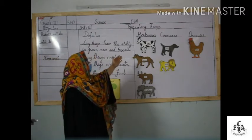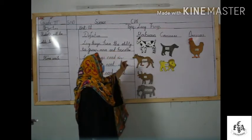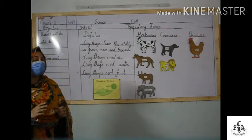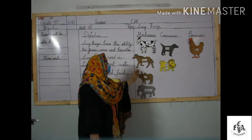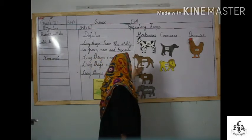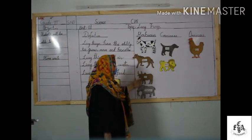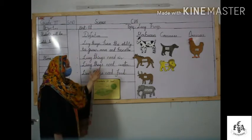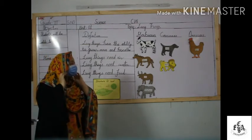Now, there are three types of living things based on the different types of food they eat. Number one: herbivores. Green plants can make their own food. Animals that do not make their own food and eat green plants are called herbivores. For example, goat, horse, ox, and elephant are all herbivores.